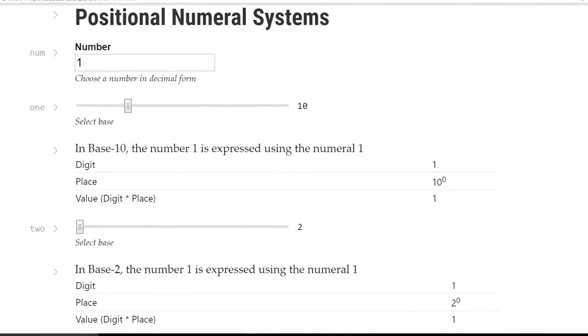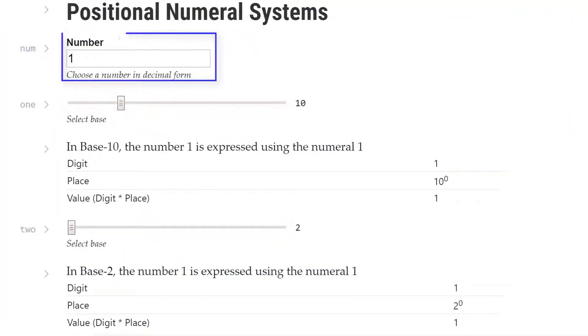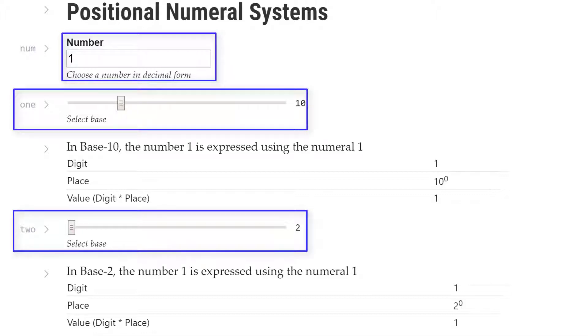Let me show you how this works. We choose a number in decimal form at the top, and then we have the ability to compare two numerals with different bases. The cool thing here is that we can change the number at the top, or either one of the bases, and the tables update in real time.